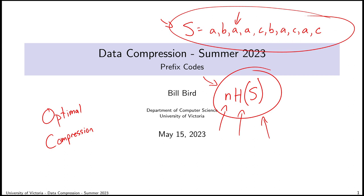So what I want to talk about today is the practical matter of: once I know how much a symbol is worth — its self-information — how do I fairly value it when I encode it? For example, lowercase 'a' is worth relatively little because it's very common, so it has lower value than more rare symbols like 'c' or 'b'. Once I know how much a symbol is worth, I want to find some way of fairly valuing it when I encode it.